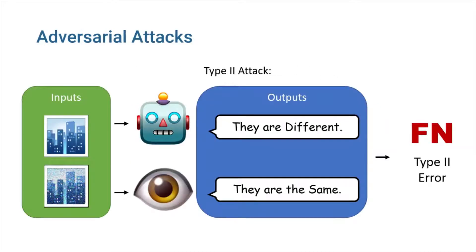In order to perform a type 2 attack, the attacker has to produce instances which look the same to the oracle, but the trained classifier classifies them in two different classes. So, while in fact the two inputs are from the same class, the classifier falsely classifies them into different classes, causing a false negative.